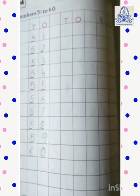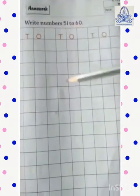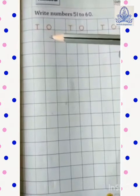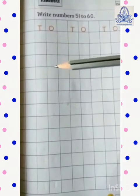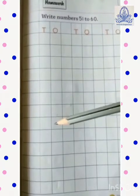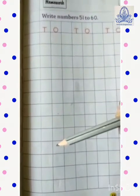Now, come to page number 48. This is your homework. यहाँ पे भी आप लोगों को numbers 51 to 60 लिखने हैं. जो हमने लिखा अभी पहले — 51 to 60 — वही आपको इस page पे करना है. 51, 52, 53, 54, 55, 56, 57, 58, 59, and then 60.